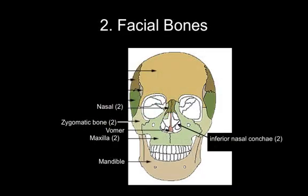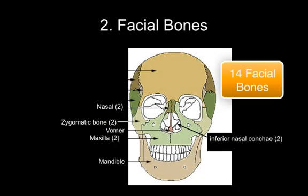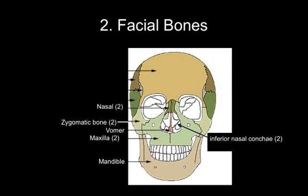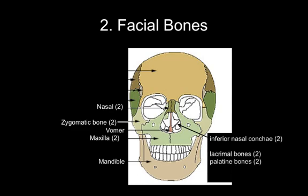Here are the facial bones — there are 14 of them. You've got two nasal bones, two zygomatic bones, a vomer, a maxilla (which is actually two bones), a mandible, two inferior nasal concha, and two more sets of bones that are difficult to see from this view: the lacrimal bones and the palatine bones. We'll see those in later slides.